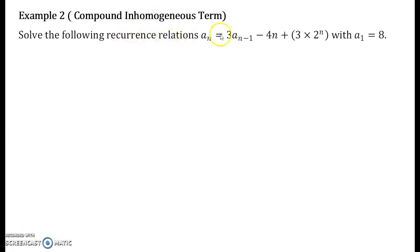Solve the recurrence relation: a_n equals 3·a_{n-1} minus (4n + 3)·2^n, with a_1 equals 8.